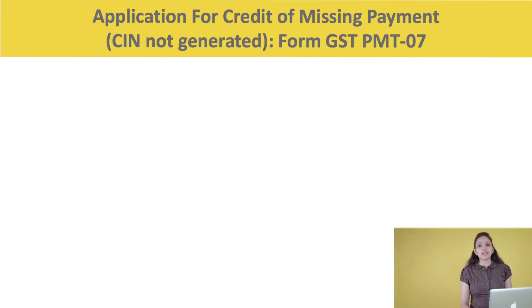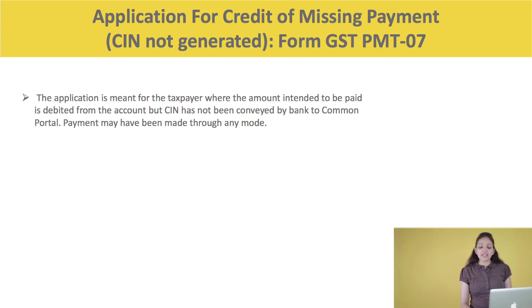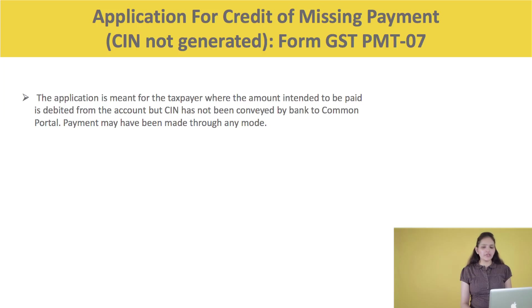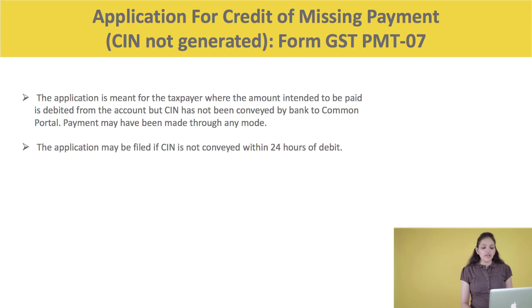If the Chalan Identification Number is not generated even after making the payment from the bank account, the taxpayer can make an application for the credit of missing payment in form GST PMT 7. This applies where the amount intended to be paid is debited from the account but the CIN has not been conveyed by the bank to the common portal, regardless of the payment mode used. The application may be filed if the CIN is not conveyed within 24 hours of the debit.